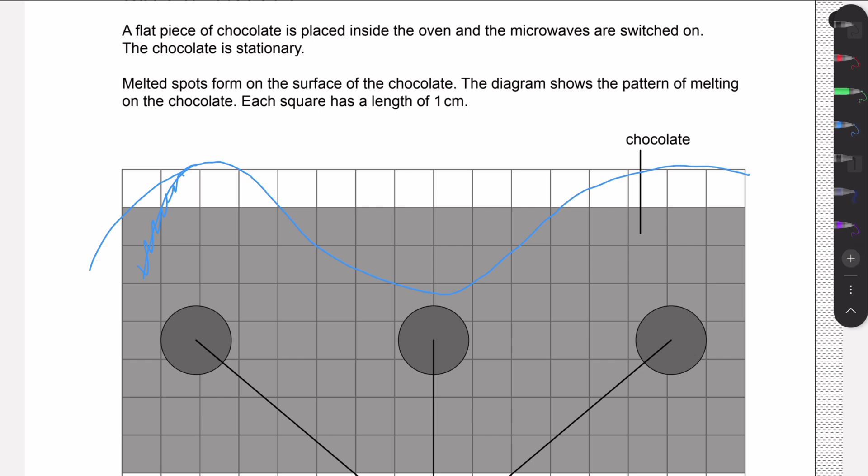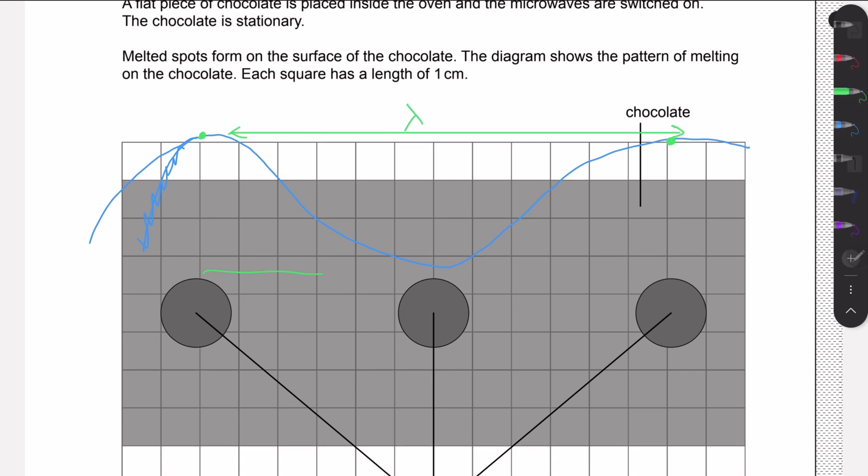We know the wavelength is defined as the distance between two crests or two troughs. So for example, this distance here would be one wavelength. Well, technically it would be from the middle of one melted spot to the middle of the other one. That's where we will have these anti-nodes.